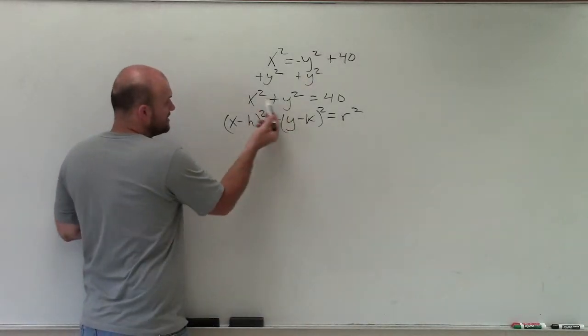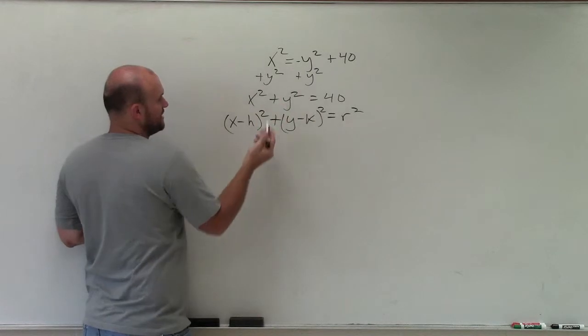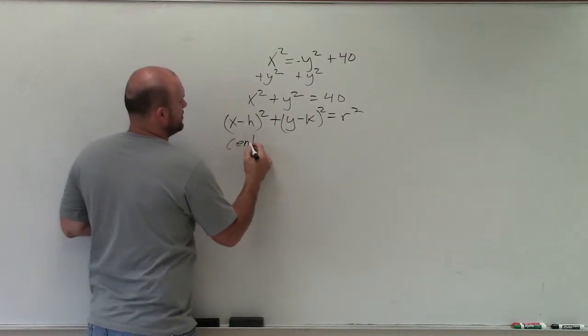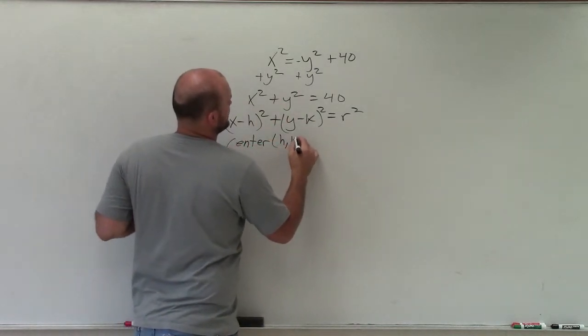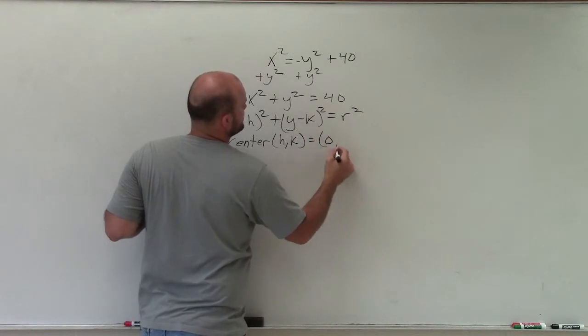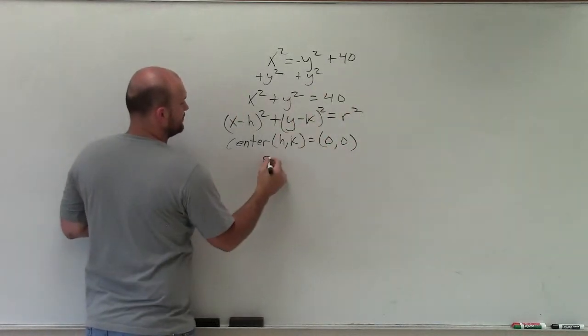Well, h and k, I'm not subtracting by anything. So my center, which we write as h comma k, it's just equal to 0 comma 0. My r squared is going to be equal to 40.